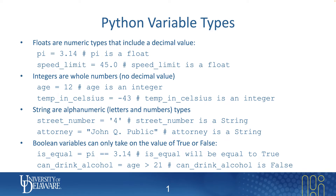Here's an example of four different variable types, and these are the ones we're going to be using the most this semester. The first one is a float. A float is simply a number that has some kind of a decimal value. In the first example, you'll see pi — pi is 3.14. The hashtag, by the way, is a comment, so anything after that hashtag is ignored by Python. We can make a comment there to indicate and explain what we're doing.